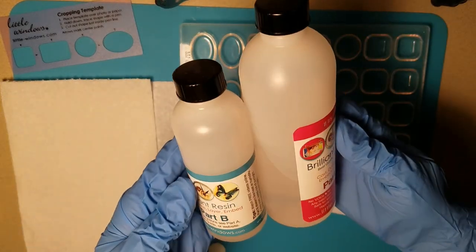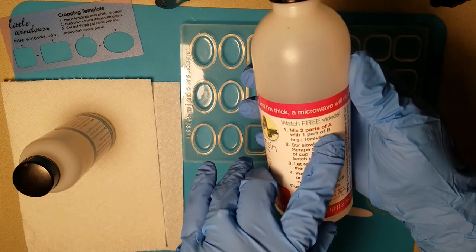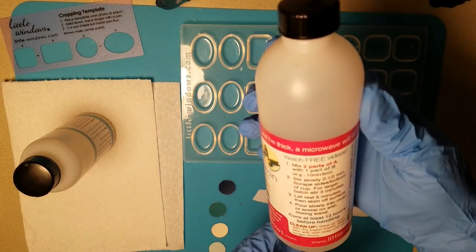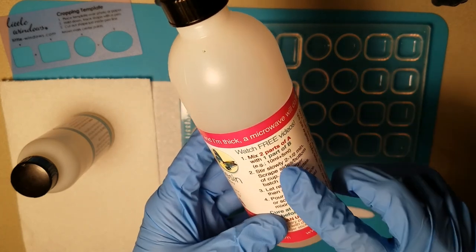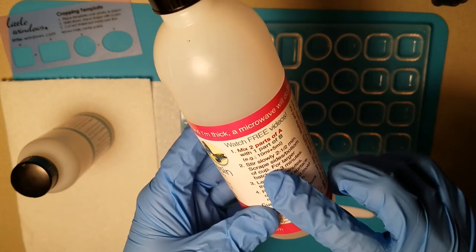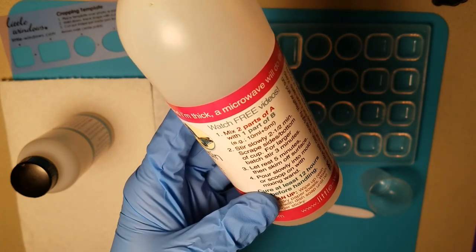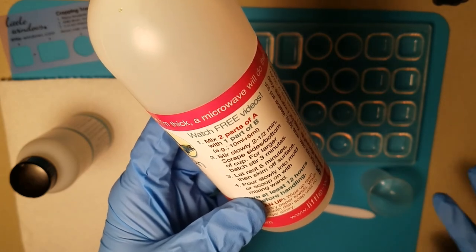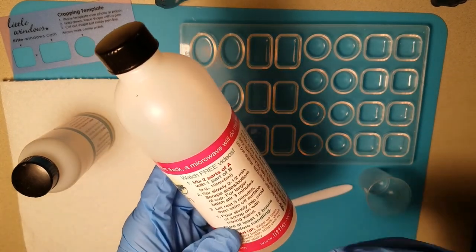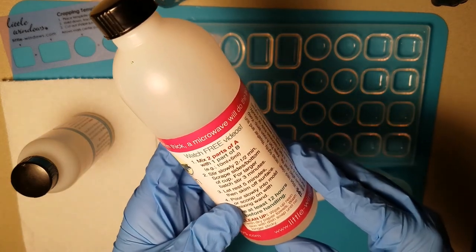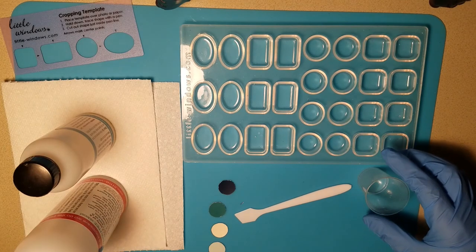Alright. So we're ready to mix this resin. Like I said, this is part A. And it has two parts of A to one part of B. So that's ten and two parts of A, and five. And that's what I'm going to start with today. The 15 milliliters, ten of A and five of B. And it says stir slowly, two and a half minutes, scrape sides and bottom of cup. And for larger batches, you may want to stir for three minutes. And then you just let it sit for five minutes and wait for all the bubbles that rise to come to the surface. And then you would take your wand, and just scoop out the very top layer of your resin that has the bubbles in it that hasn't popped on its own yet. And then after that, you're fine to use your resin and your molds.